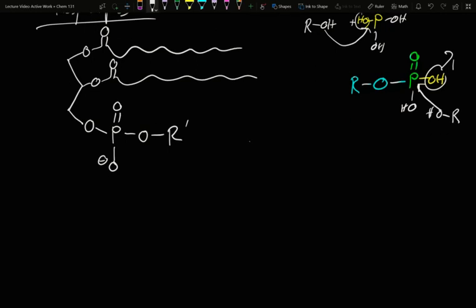There are a couple different R groups. So R can equal a couple things. You can have two carbons and then a nitrogen with three methyls.